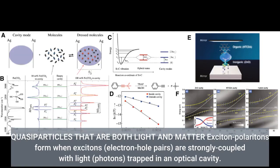Quasiparticles that are both light and matter: exciton-polaritons form when excitons (electron-hole pairs) are strongly coupled with light (photons) trapped in an optical cavity.